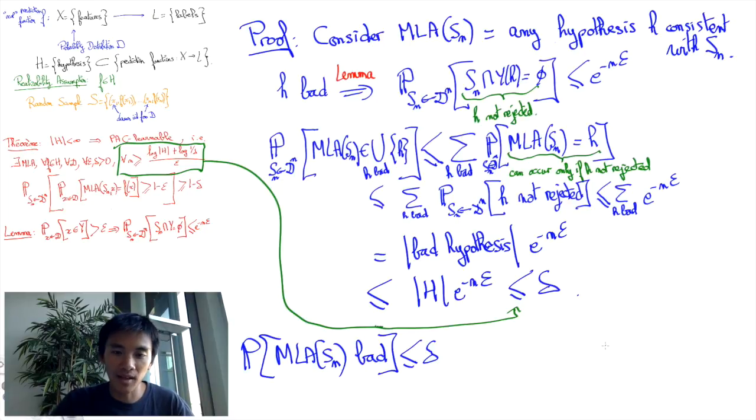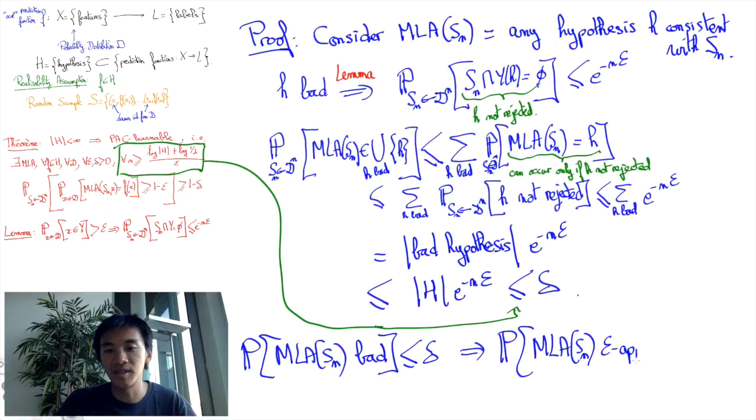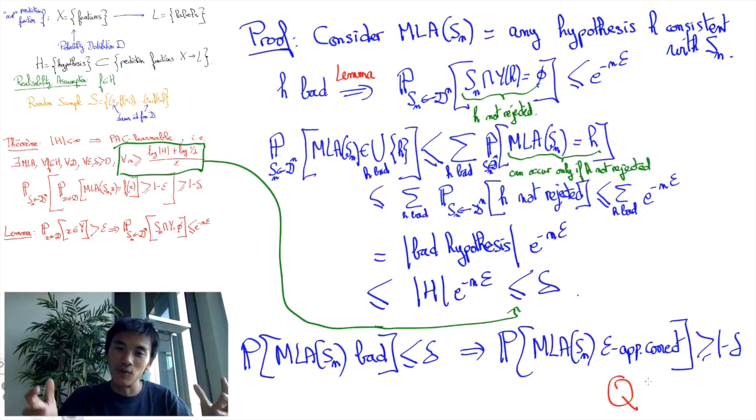And this means that with probability at least 1 minus delta, we're going to pick a hypothesis that is not bad, that is, a hypothesis that is epsilon-approximately correct. We have the exact definition of PAC learning. QED.